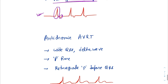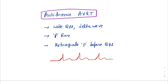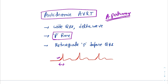In antidromic AVRT, the impulse travels not via the AV node but through the accessory pathway. Since it travels through the accessory pathway, the ECG changes will resemble accessory pathway transmission as in WPW syndrome — there will be a delta wave and an overall wide QRS complex. Most of the time the P wave will be absent; presence of P is quite rare. Even if present, there will be a retrograde P wave just before the QRS complex, but it is rare. This is all about AVRT, a medical emergency — we should be able to diagnose it from the ECG and successfully treat the patient. Thank you so much for your patient hearing.